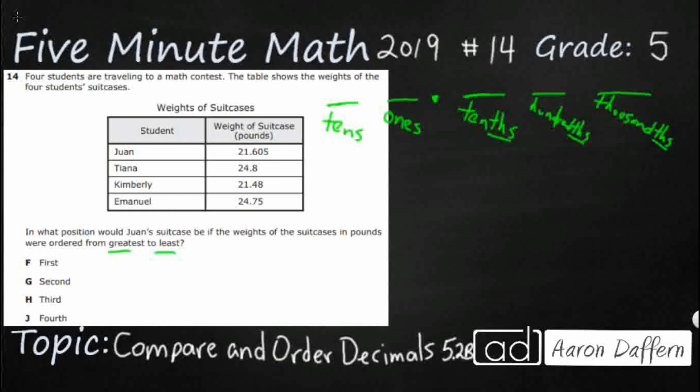So we are looking for greatest to least. Let's go ahead and find our biggest number. We always start with the largest place value first, but it looks like we can just kind of ignore the tens place simply because everything has a two in the tens place — we all have a twenty-something, twenty-one or twenty-four. So it looks like Tiana and Emanuel are the two we need to look at first, because in the ones place you've got twenty-four and twenty-four — those two are tied.